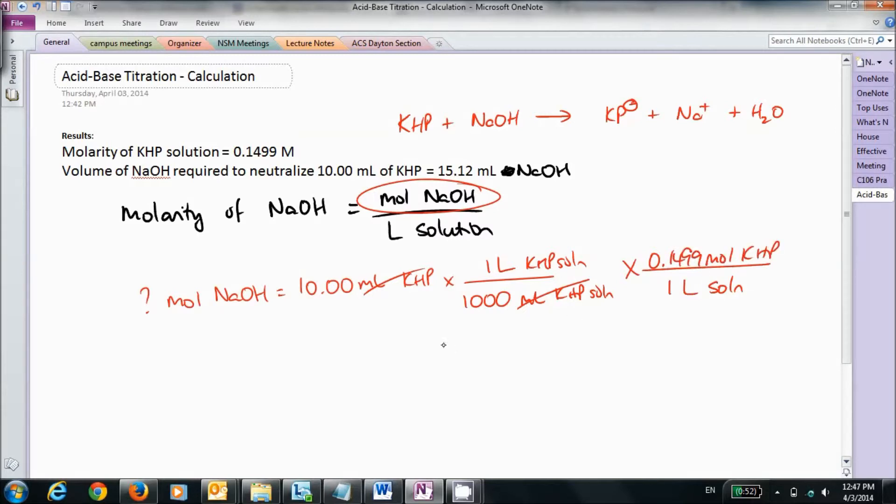And then there is 1 mole of KHP for every mole of sodium hydroxide. When I do this, I find out I have 0.001499 moles of NaOH that has reacted.